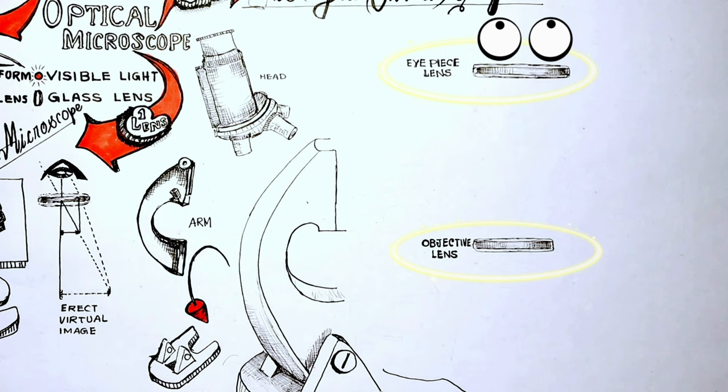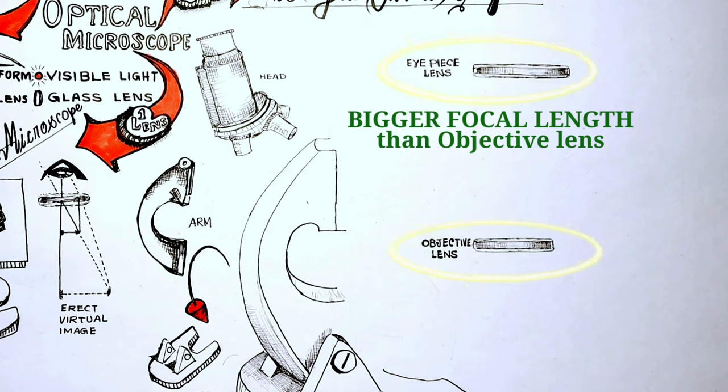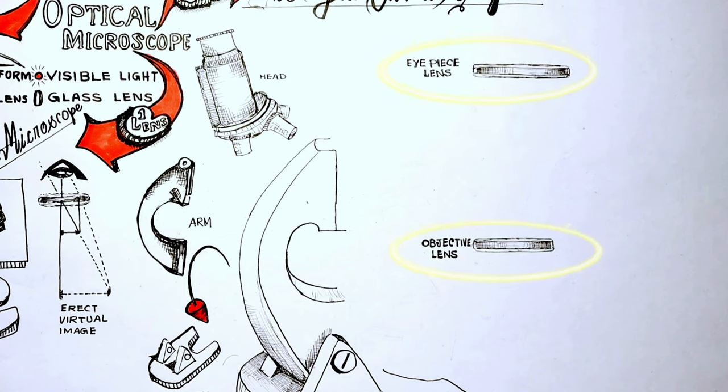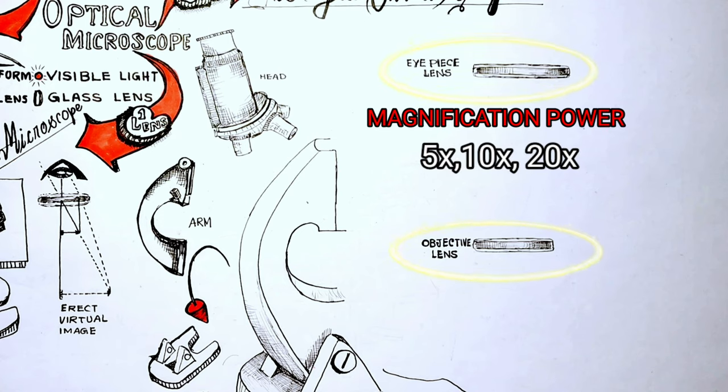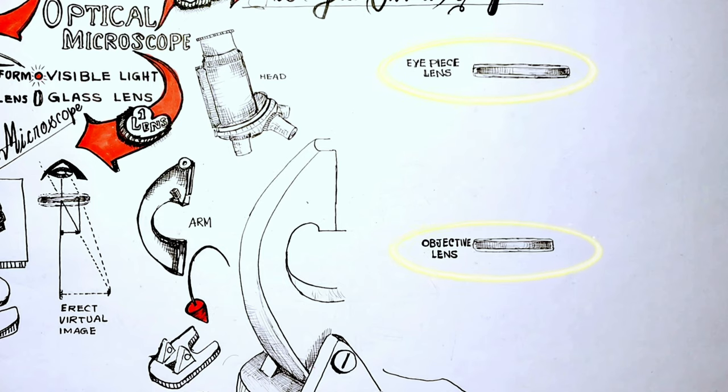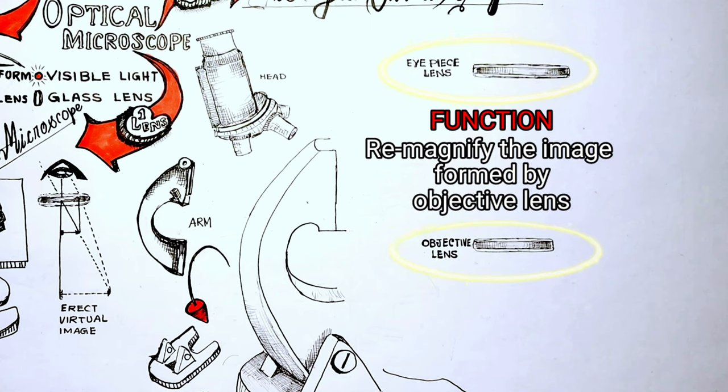Eyepiece lens is the one that you look through at the top of the microscope. As we already know that its focal length is bigger than the focal length of the objective lens. Typically standard eyepiece have a magnification power of 10x although lenses of varying powers like 5x, 20x are also used as per situation. The purpose of the eyepiece lens or ocular lens is to present a remagnified image of the real image formed by the objective lens to our eyes.